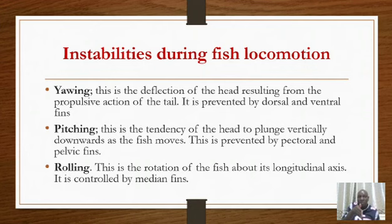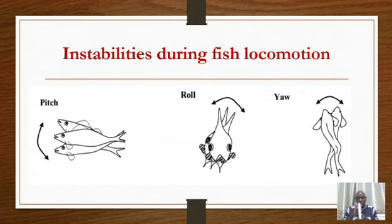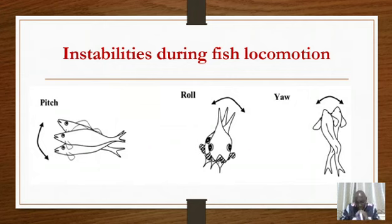The other instability is pitching. Pitching is the tendency of the head to plunge vertically downwards as the fish moves forward. In other words, instead of moving normally as the fish is swimming, the head is pushed down — it plunges down like that. So instead of swimming freely, the fish would be destabilized by that downward force on the head.